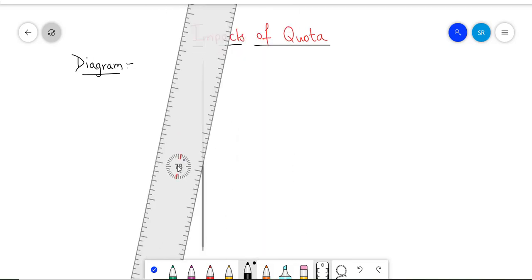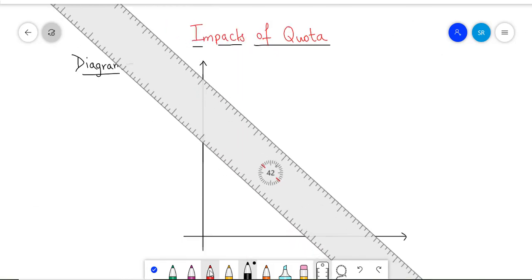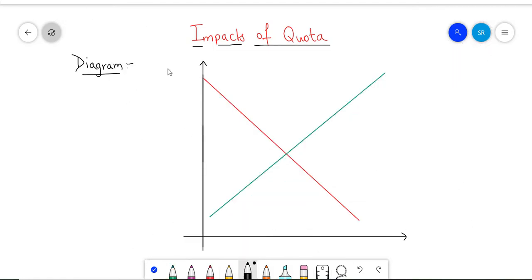So let's look at this diagram. On the x-axis, we have plotted quantities and on the y-axis, we have plotted prices.